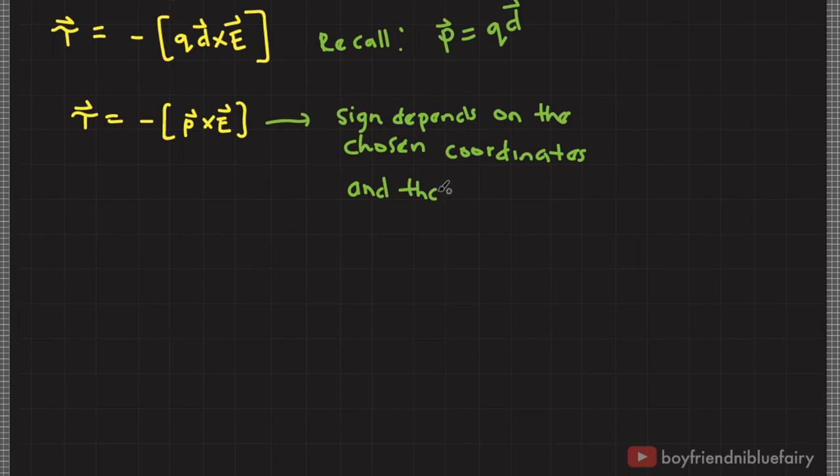Therefore, we can drop the negative sign since this just depicts a special case where the rotation of the dipole is opposite with the positive Z axis of the randomly chosen coordinates.